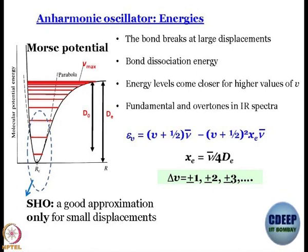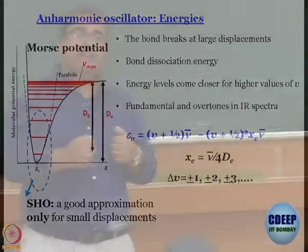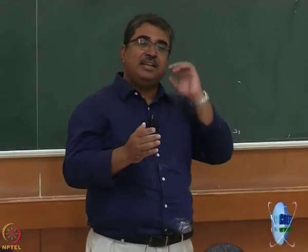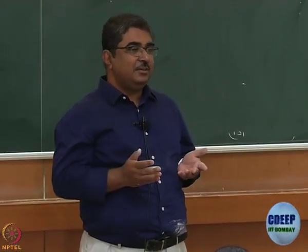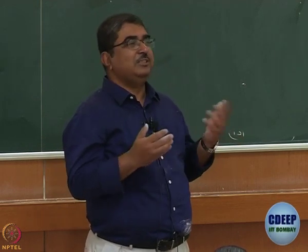The correction is minus Xₑ ν̃ (v + 1/2)², where the minus sign reflects that the energy levels go down relative to expectation as you go higher up the ladder. Xₑ is called the anharmonicity constant. What should it be related to? The main difference between a harmonic and anharmonic oscillator is dissociation energy. So Xₑ has to be related to dissociation energy. The dissociation energy for a harmonic oscillator is infinite, and correspondingly Xₑ for a harmonic oscillator should be zero.